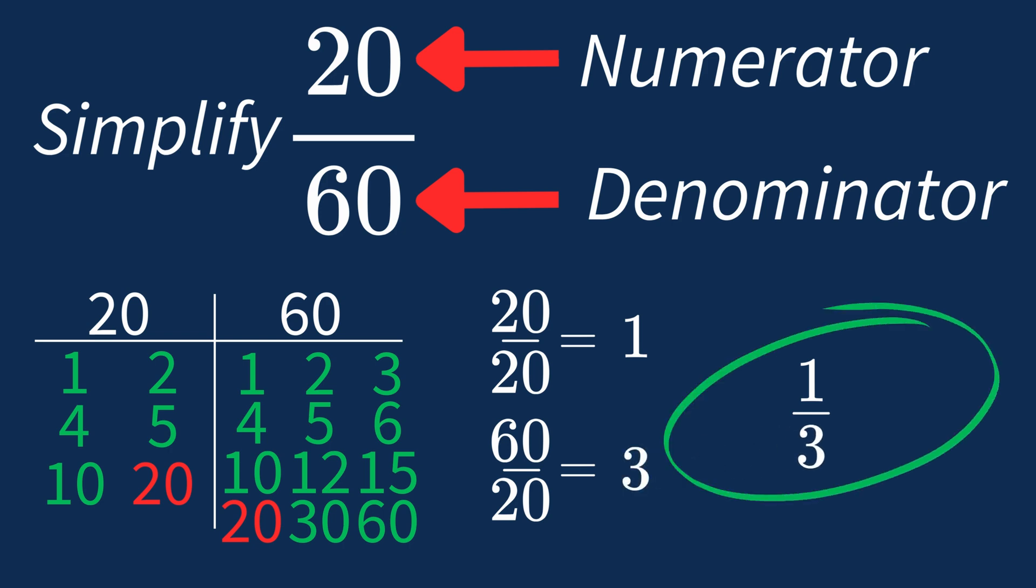And we know that 1 over 3 is in its simplest form, because the only common factor between 1 and 3 is 1. And when 1 is the largest common factor, we know that our fraction has been simplified.